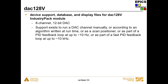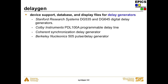The DAC128V module is for a specific industry pack D-to-A converter. You can run it manually for a single D-to-A conversion, run it to an algorithm — generate a sine wave, for example — use it as a scan positioner, use it as part of a slow feedback loop at up to 10 Hz involving EPICS record processing, or use a fast PID feedback loop done entirely in an interrupt service routine at up to around 10 kHz. The delay generator module supports several different delay generators. I don't know very much about this module — that's Don Arms's area.